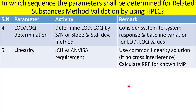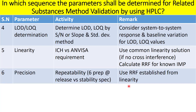Another important objective during linearity is the establishment of relative response factors (RRF) for the known impurities. Once the linearity has been performed and RRF is available, you can then plan for precision. Use the RRF determined during the linearity study for the calculation of impurities present in the spiked sample during the precision study.